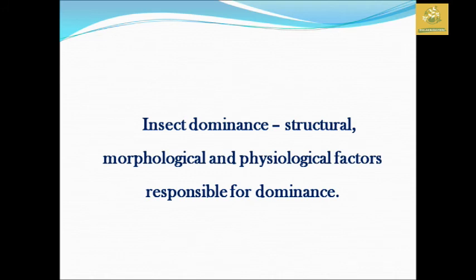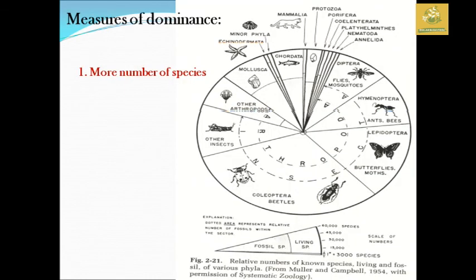Insect dominance is a psychological factor and it is responsible for dominance. The measure of dominance is a variety of species. We are going to talk about species — around the history of insect species in the 20th century.